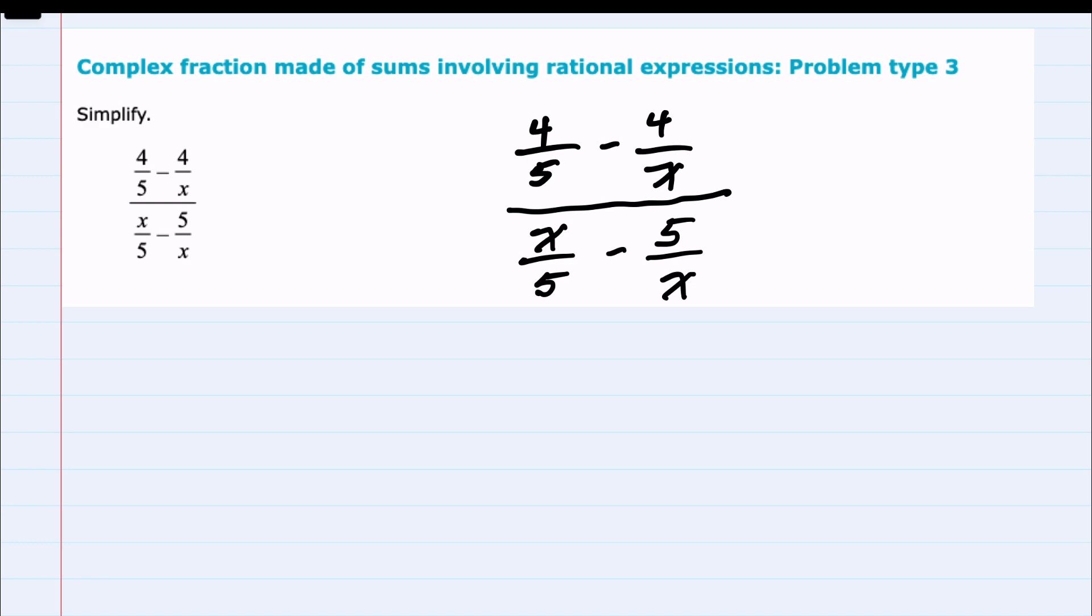So to remove those fractions I need to identify the lowest common denominator in the numerator and the lowest common denominator in the denominator portion of this complex fraction. So we're looking at all of these denominators that are a part of the complex fraction and of all of these the lowest common denominator for everything is 5x that has both the 5 and the x.